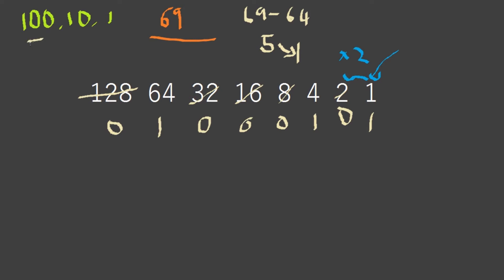Like our number system where 532 is five lots of 100, three lots of 10, and two lots of 1, here it's one lot of 64, zero lots of 32, zero lots of 16, zero lots of 8, one lot of 4, zero lots of 2, and one lot of 1.